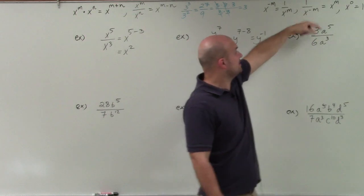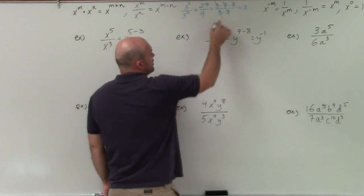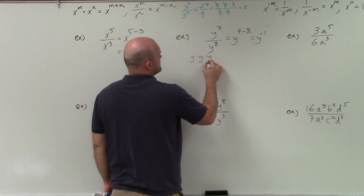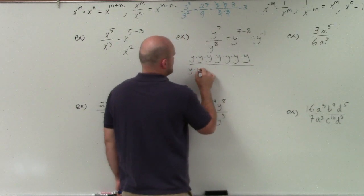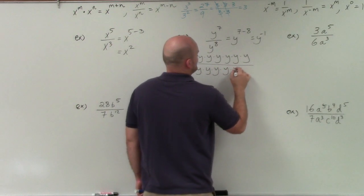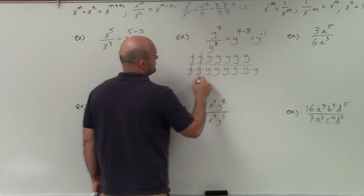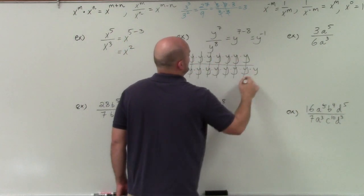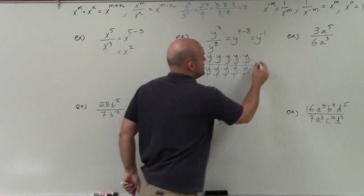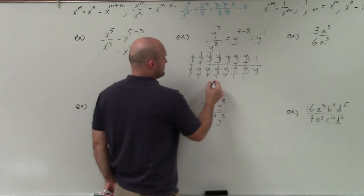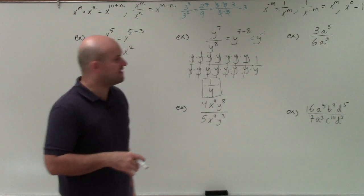If it's a negative power in the denominator, I can write it positive in the numerator. The reason why this makes sense — let's break this apart. y to the seventh is really y times y times y times y times y times y times y, all over y times y times y times y times y times y times y times y. Using the division property, terms cancel to 1, and you're left with 1 over y. So y to the negative first power is the same thing as 1 over y. With negative powers, we usually like to leave them with positive powers.